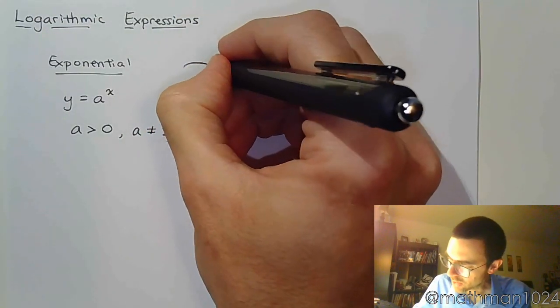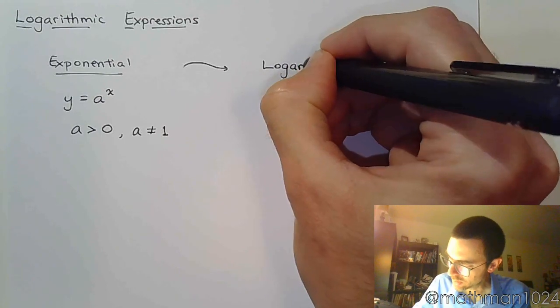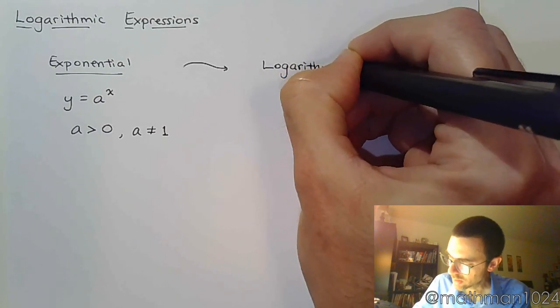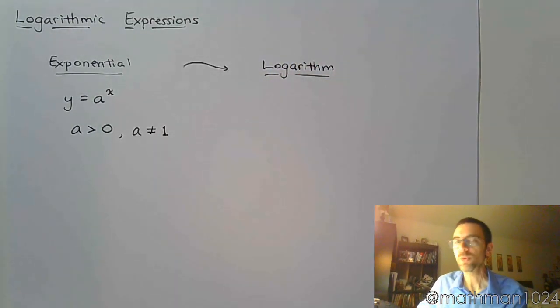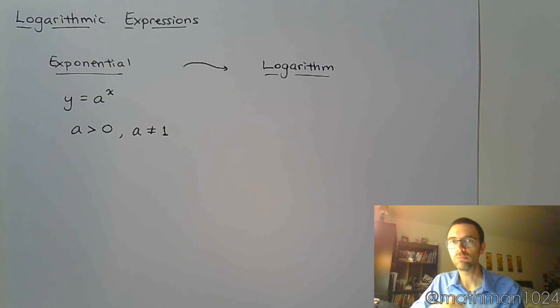Well now we're going to see how that compares and how we end up with the logarithm. So we said that exponentials were one to one, which means they have an inverse, and their inverse happens to be the logarithm or more commonly referred to as log.